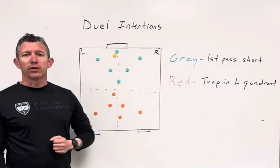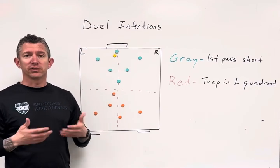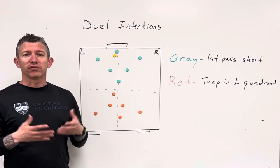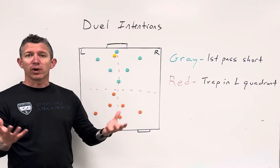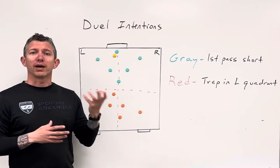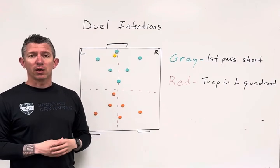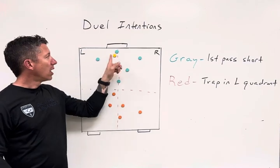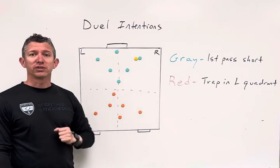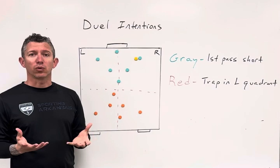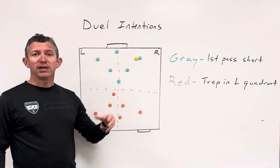Good morning coaches. Today I'm going to be talking about how we can use different intentions in our playing sessions and session activities to create more realism for how we play. Typically in a given session we have our general theme and everyone is aware of what we're working through. When we add restrictions or conditions to our gameplay — for example, building out of the back where the first pass has to be short — everyone on the entire field knows that, and it's going to change how the gameplay is organized. Red, for example, if they know that first ball has to be short, they don't necessarily have to commit defenders to the opposing attackers.